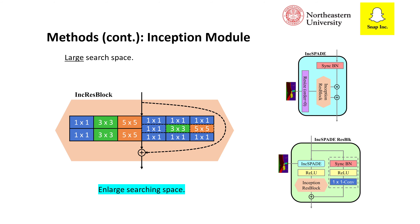The first method is to introduce the inception module for the generator, which enlarges the searching space. The inception module we use consists of six different blocks: three have conventional convolution layers, and three are depth-wise blocks. We also use our inception blocks for the split module.